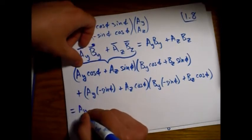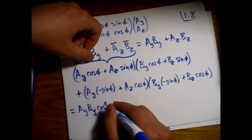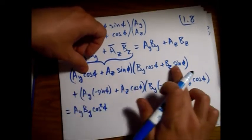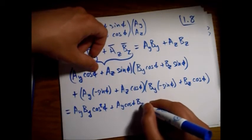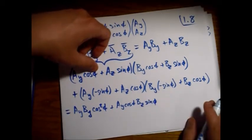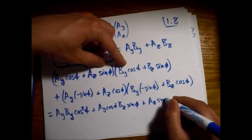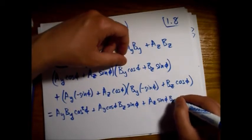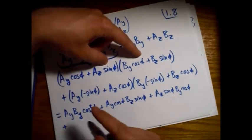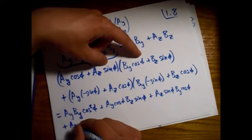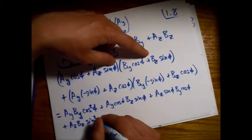Alright, so A_y B. So I'm taking these two terms together. And this is cosine squared φ. And now I'll take this term times this term. A_y cosine φ, B_z sine φ. Okay, now I'll take these two. A_z sine φ, B_y cosine φ, and then these last two terms. So A_z B_z, and then we'll have sine.